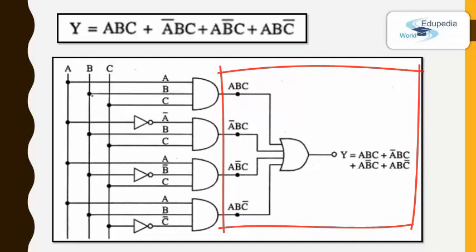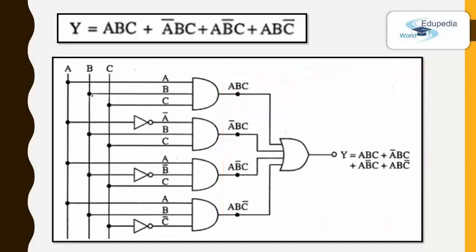That's how you draw the logic circuit for the given boolean expression. Remember, there is no restriction on how many inputs an AND gate or OR gate can have — here the AND gate used three inputs and the OR gate used four inputs, so you can have many inputs. However, for the NOT gate it can have only one input. You should always remember this fact when drawing the logic circuit.